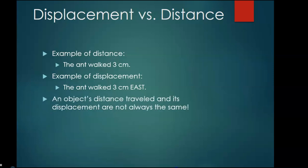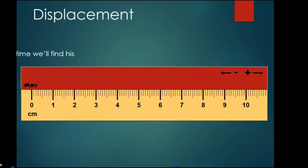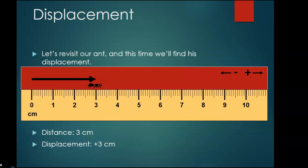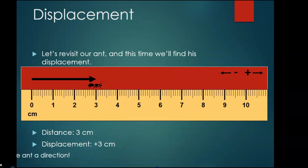An object's distance traveled and its displacement are not always the same. Let's revisit our ant and find his displacement. The distance is three centimeters and the displacement is positive three centimeters. The legend shows negative means backward and positive means forward. The positive sign gives the ant a direction.